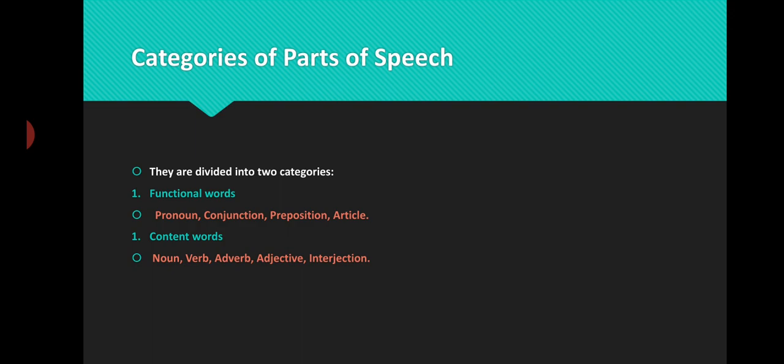These parts of speech have been divided into two categories, two different classes. One class is known as the functional class. These are the functional words — they perform some important grammatical function in sentences. In English grammar, they are almost fixed in number, and it very rarely happens that there are new additions, because language is a living entity.